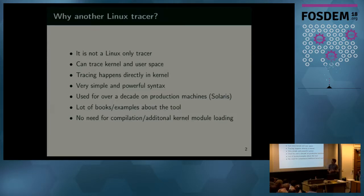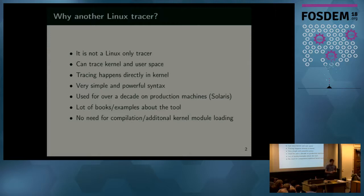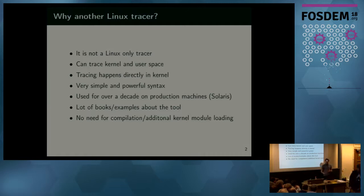One strength of D-trace: it can trace kernel, it can trace user space. Tracing happens directly inside the kernel at the probe time. D-trace has its own scripting language called D — basically a superset of C. It's very simple and yet quite powerful. We've been using it at Sun and Oracle for about a decade to troubleshoot production machines. There are also a lot of books and documents about D-trace. It is not a new technology — it is new for Linux.